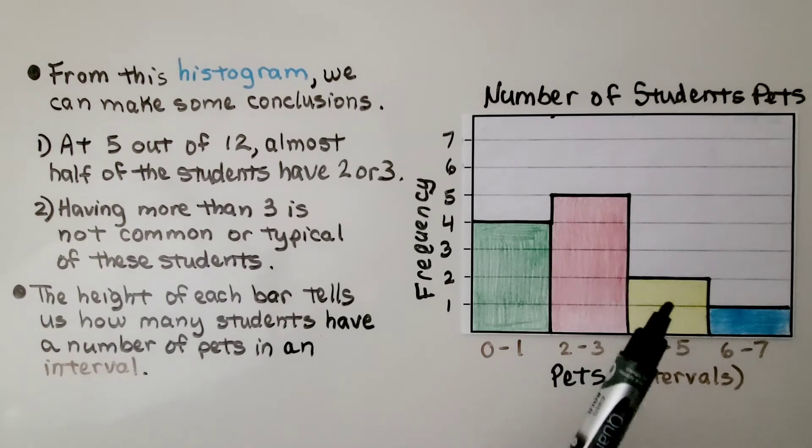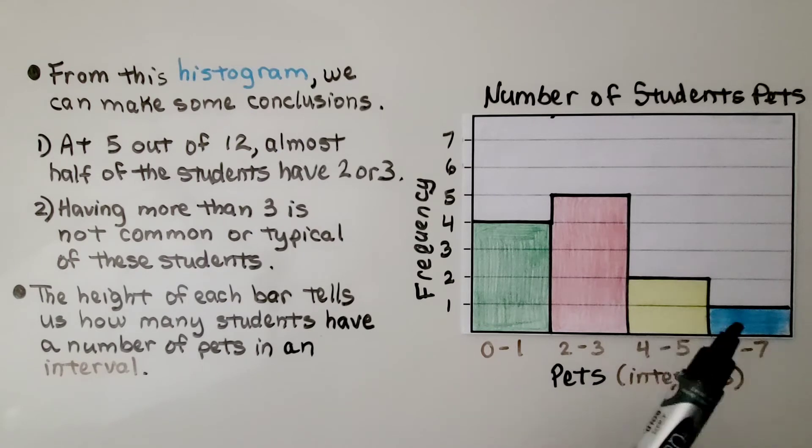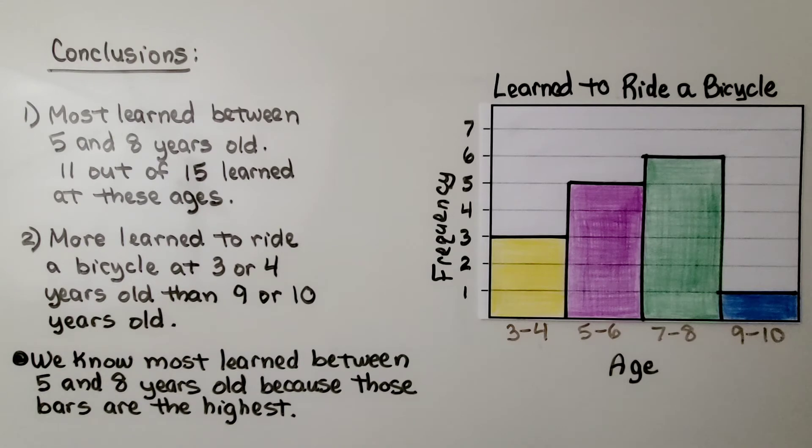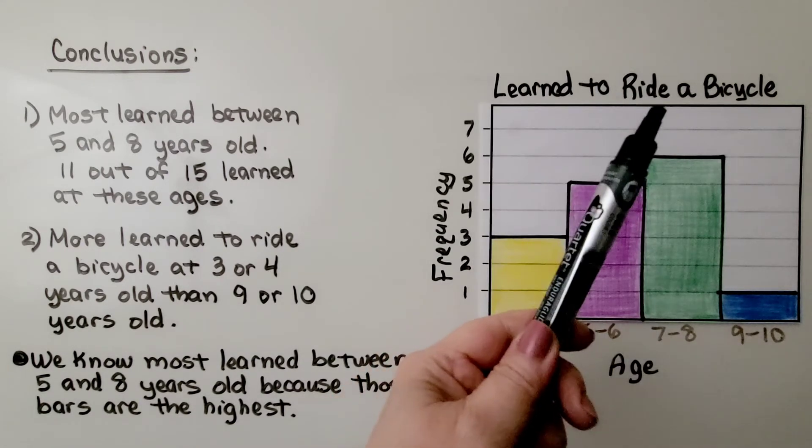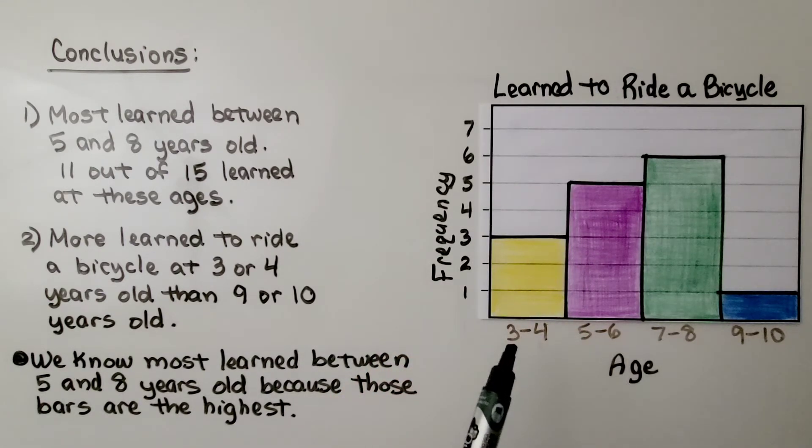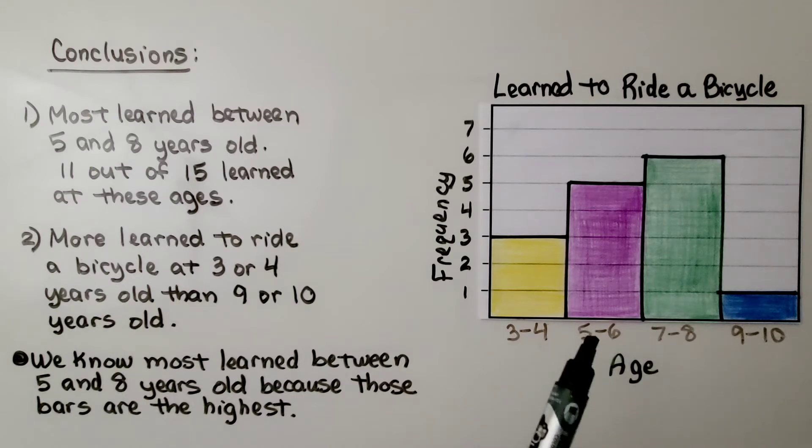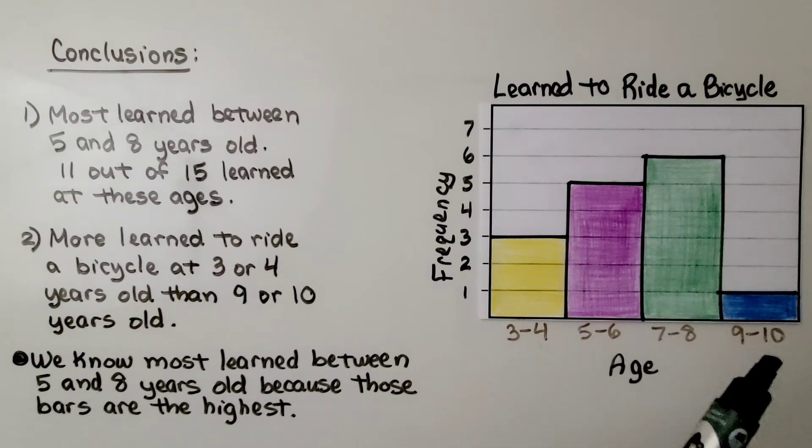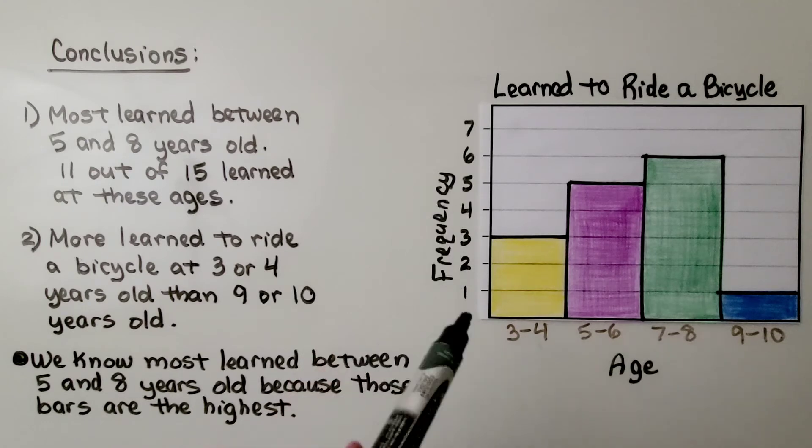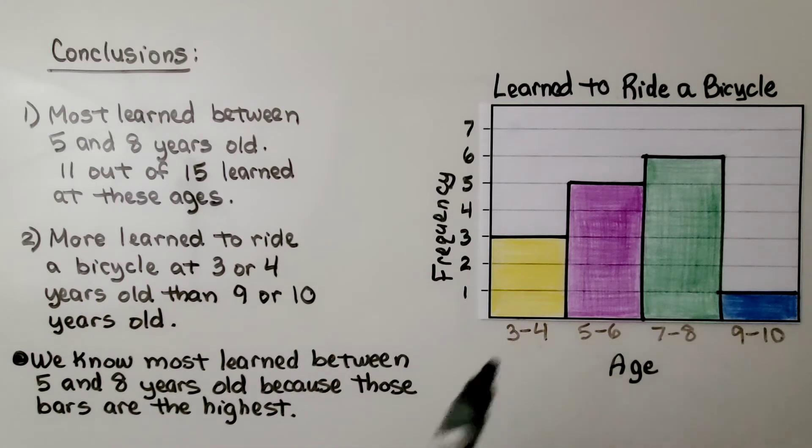So if you have more than 3, the bars are short, so it's not very typical. The height of each bar tells us how many students have a number of pets in an interval. Now this histogram is about learned to ride a bicycle. And it's got the ages 3 or 4 years old, 5 or 6 years old, 7 or 8 years old, or 9 or 10 years old. The frequency tells us how many people are in that interval.